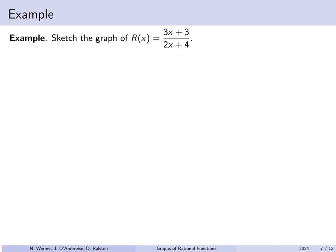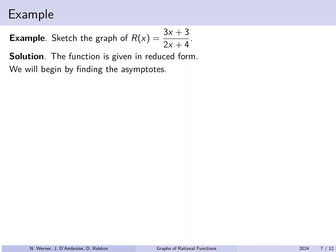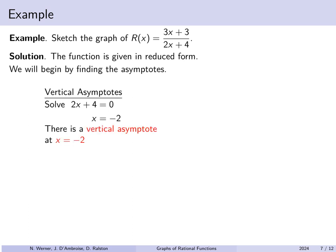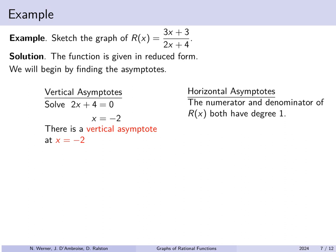Let's sketch the graph of r of x equals (3x + 3) over (2x + 4). This is already in reduced form. To find vertical asymptotes, set the denominator equal to zero: x equals minus 2. To find horizontal asymptotes, the numerator and denominator have the same degree, so there is a horizontal asymptote given by y equals the ratio of leading coefficients — 3 over 2 — giving y equals 3 halves.